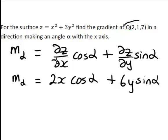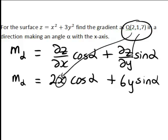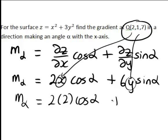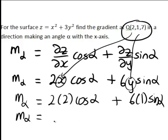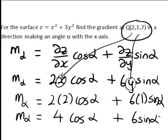We're given a specific point Q with coordinates 2, 1, 7. That point has X equals 2, Y equals 1. So therefore at this point we get M_alpha equals 2 times 2 times cos(alpha), plus 6 times 1 times sin(alpha), giving us the gradient at that point as M_alpha equal to 4·cos(alpha) plus 6·sin(alpha).